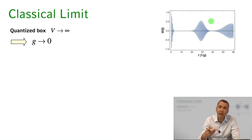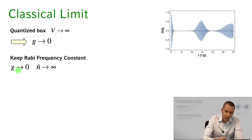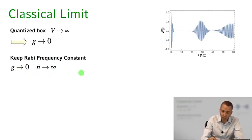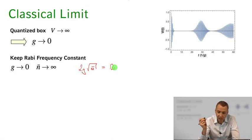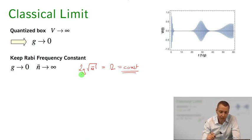We take the classical limit by letting the box volume go to infinity so that g goes to zero, while simultaneously letting the average photon number go to infinity, such that 2g·√n-bar — which is our classical Rabi frequency — stays constant. So we take the limit g → 0 and n-bar → infinity with 2g·√n-bar equal to a constant.